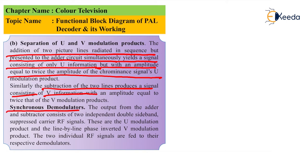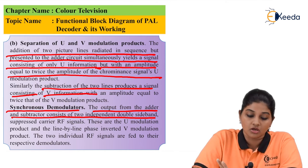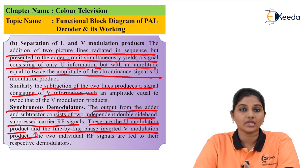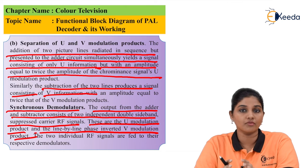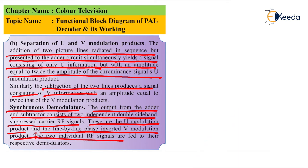The next stage is the synchronous demodulator. Just as the encoder used synchronous modulation, the receiver requires synchronous demodulators to recover the original signal. The output from the adder and subtractor consists of two independent double sideband suppressed carrier RF signals — the U modulation product and the line-by-line phase-inverted V modulation product. Before applying signals to the demodulators, the actual separation of U and V signals takes place. Therefore, inputs to the demodulators are the U-modulated signal and V-modulated signal, and two individual synchronous demodulators are used to recover the original information.